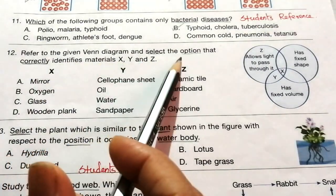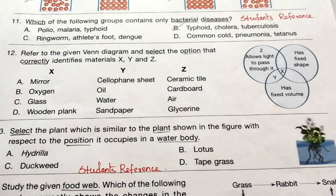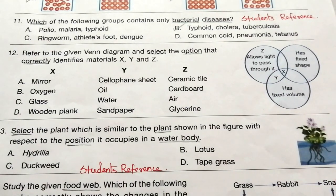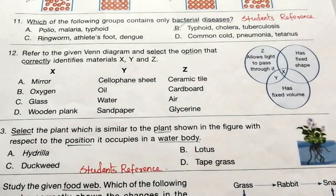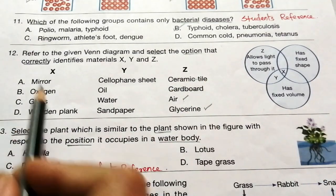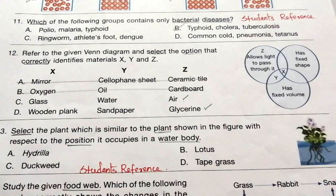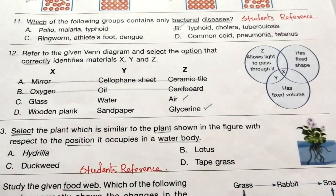Question 12: Refer to the given Venn diagram and select the option that correctly identifies materials X, Y and Z. The correct answer for Z is Air and Glycerin — ceramic tile and cardboard are wrong, so A and B are wrong. For Y, it allows light to pass through it and has fixed volume. Y is water — sandpaper doesn't allow light to pass through it, so that is wrong. The correct answer is C.